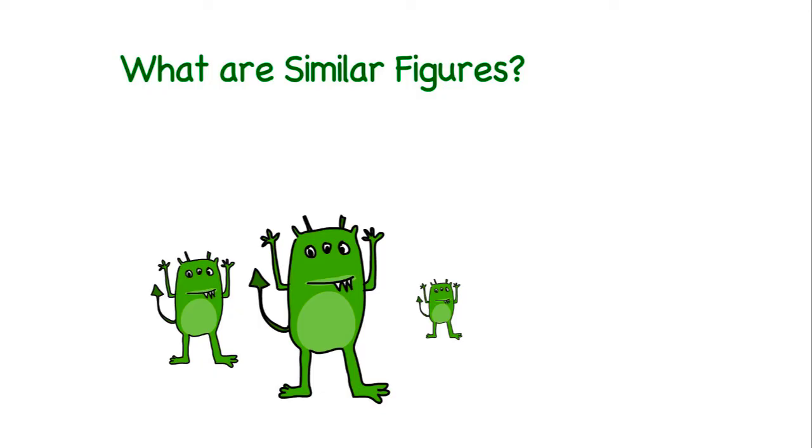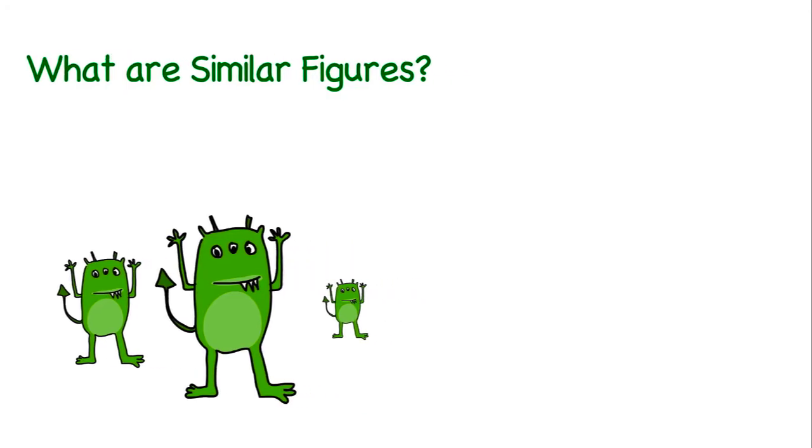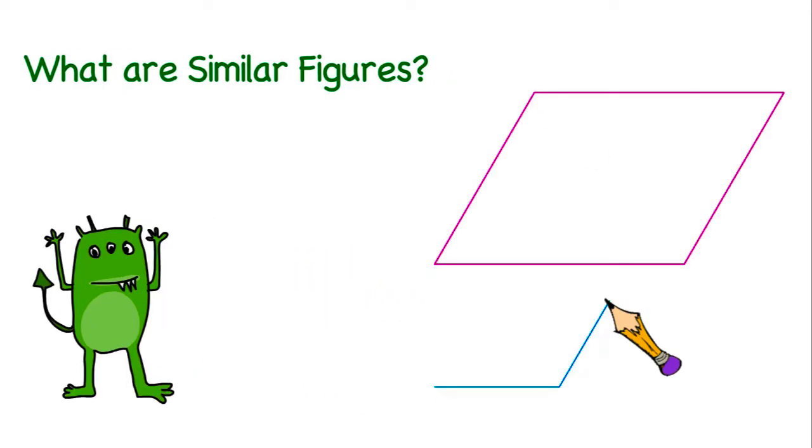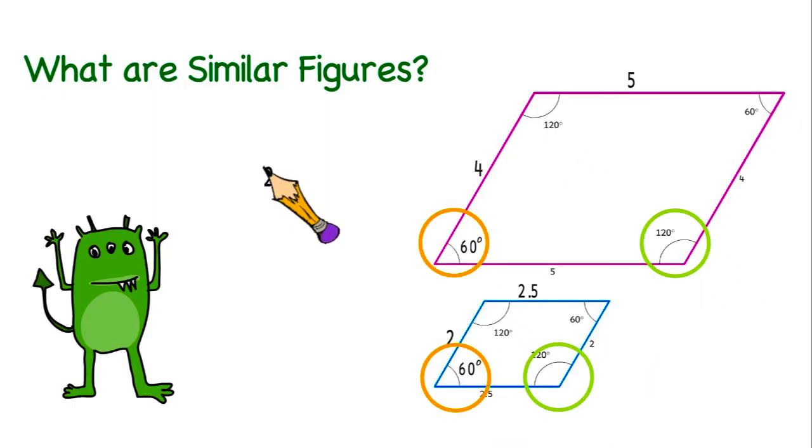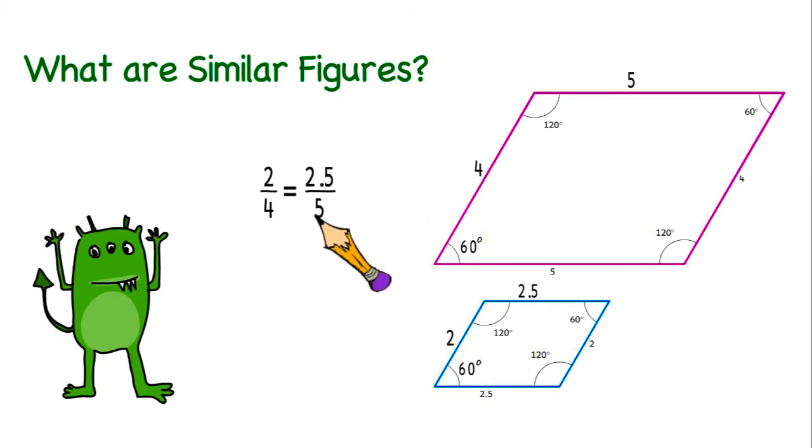Scale models are one way that the concepts of similar figures is used. For two polygons to be considered similar, their corresponding angles must have the same measurement and their corresponding sides need to be proportional. The ratio of the lengths of corresponding sides in two similar figures is the similarity ratio.